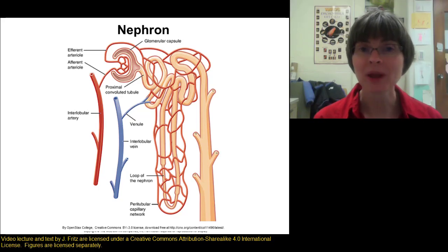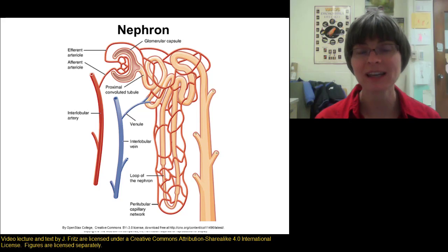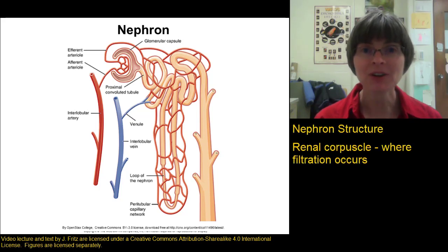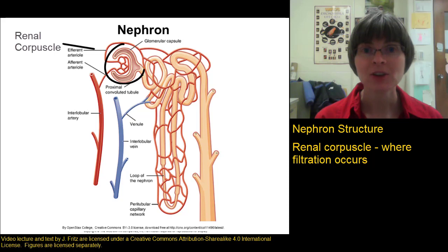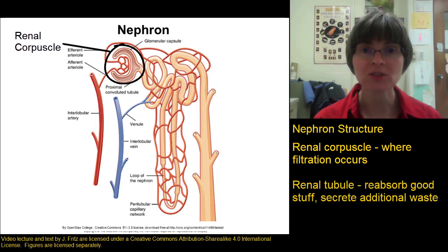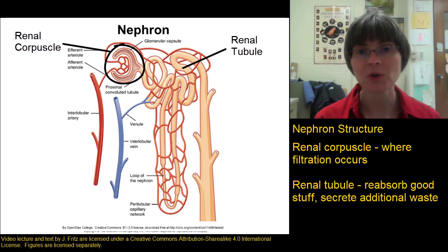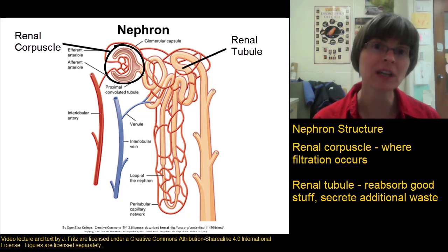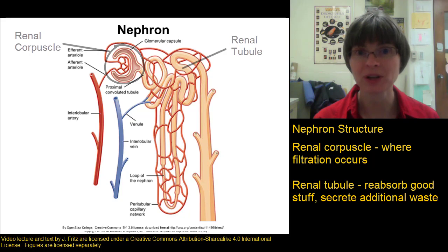Now that we've seen the blood supply to and from the nephrons, it's time to look more specifically at the nephron itself. The nephron has two main parts: the renal corpuscle, which is where the filtration actually occurs, and the renal tubule, which is this twisted-up tube where we reabsorb things we want to keep as well as secreting some more waste that we want to get rid of.